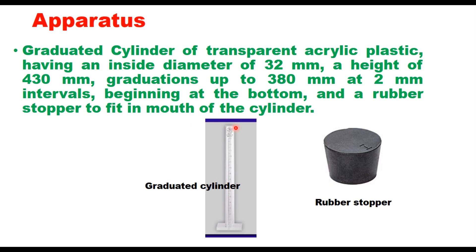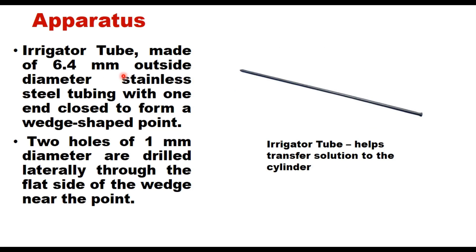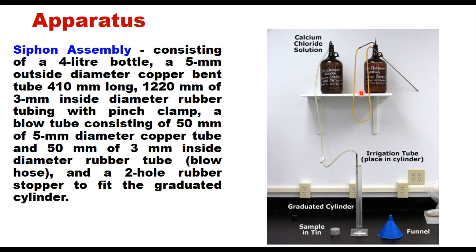The cylinders used are unique — instead of volumetric divisions, they have graduations every 2 mm. An irrigator tube made of 6.4 mm outside diameter stainless steel has one end closed to form a wedge-shaped point with two 1 mm diameter holes drilled through the flat side near the point. This tube transfers solution to the cylinder and is attached to the latex tubing of a siphon assembly. The siphon assembly consists of a 4-liter bottle with a 5 mm outside diameter copper tube of 410 mm, rubber tubing with a pinch clamp, a blow tube, and a two-hole rubber stopper to fit the graduated cylinder.